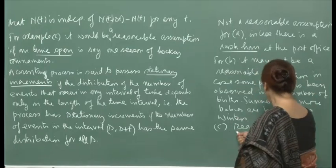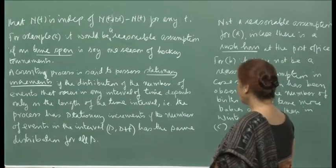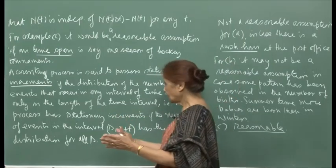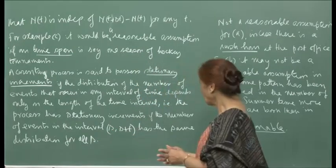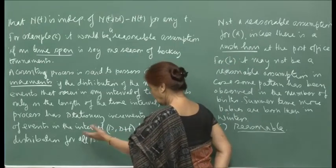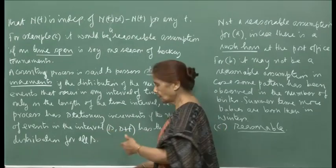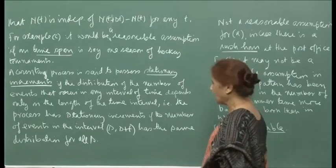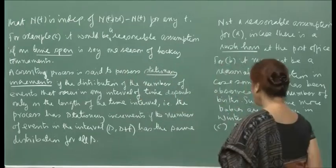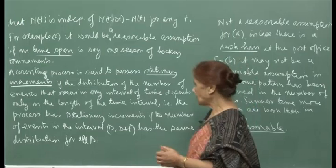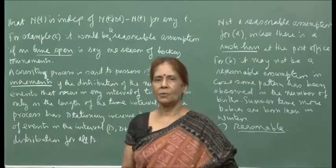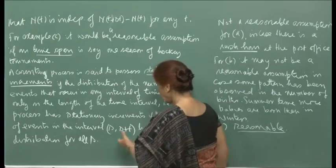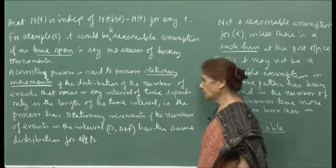Then again for C — the hockey player — it will be reasonable. If the hockey player is in form, the number of goals he hits will depend on the length of time played, and will have the same distribution dependent on the length of the interval, not on when he hits. If we restrict ourselves to one season or two seasons where a player can reasonably be expected to maintain form, then the stationarity increment assumption would be a reasonable one for C.